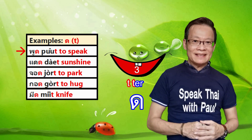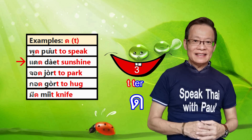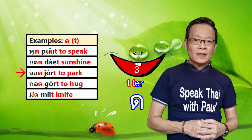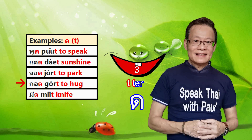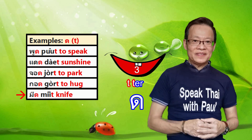Examples using dor dek as a final consonant: 'phut' (to speak), 'dek' (child/sunshine), 'jot' (to park), 'tupak' (building), 'kot' (rule), 'tuhak' (six), 'nit' (a little), 'knife.'